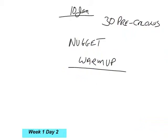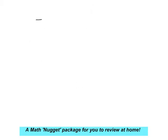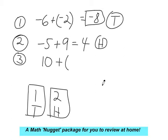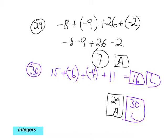Now we're doing our warm-up nugget — little packages of stuff we need to review. You should be familiar with all this because someday your nephew is going to ask you these questions. Make sure you know how to handle integers in pre-calculus. Negative 6 plus negative 2 is negative 8. Negative 5 plus 9 is 4. You should know how to do negative numbers — they've been around as long as bankers have.